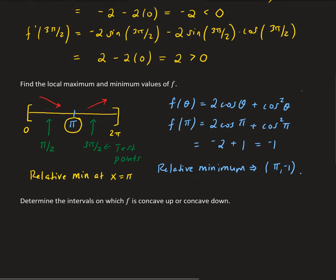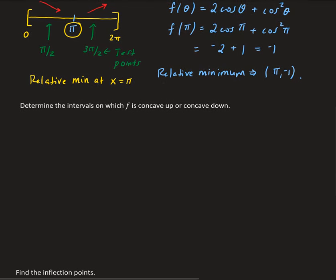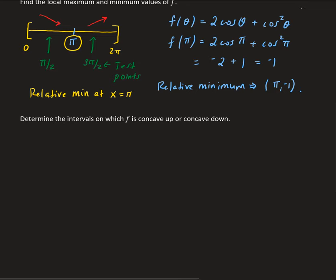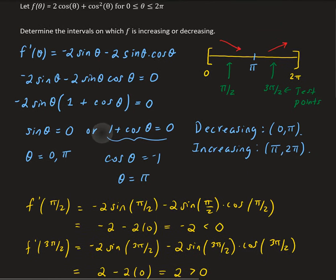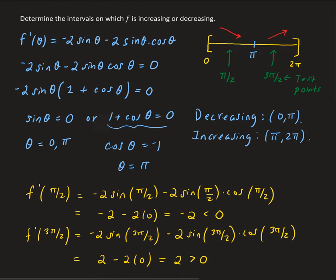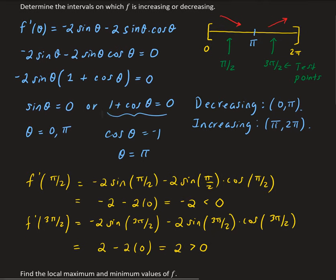To determine the intervals of concavity, we take the second derivative. The first derivative was minus 2 sine theta minus 2 sine theta cosine theta. The derivative of the first term gives minus 2 cosine theta. For the second term we apply the product rule.